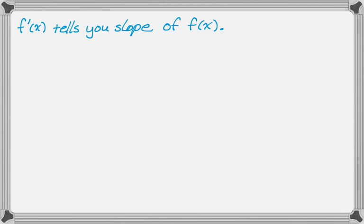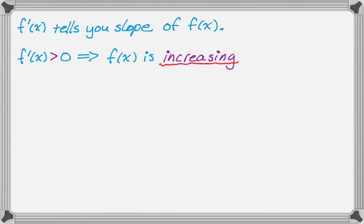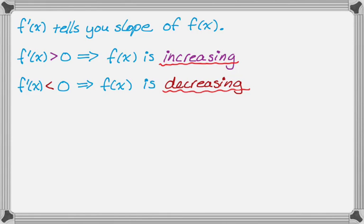So there's a couple things we get from that. First, if f prime of x is greater than 0, we know automatically that f of x is increasing because it has a positive slope. And the opposite is also true. If f prime of x is less than 0, then we automatically know that f of x is decreasing.